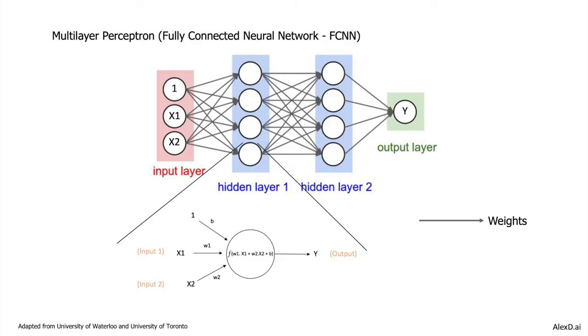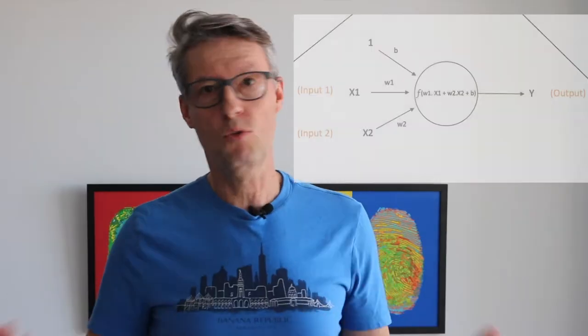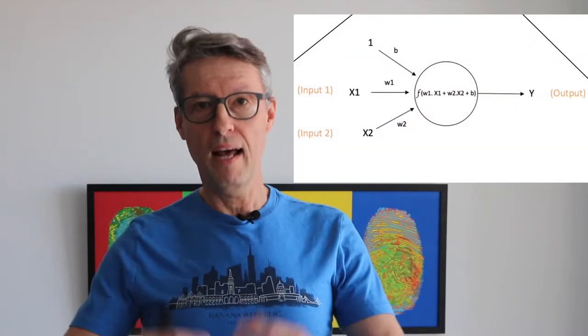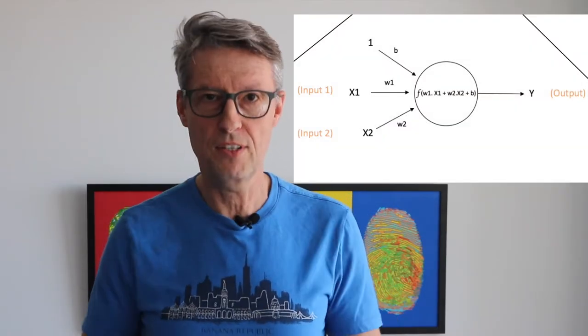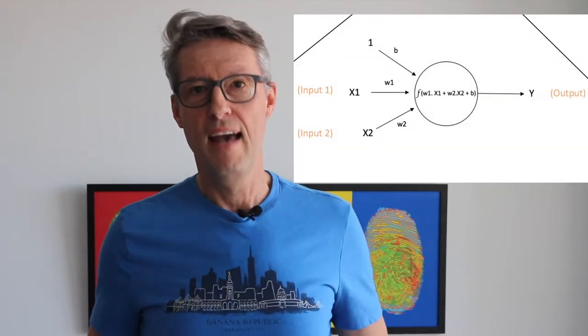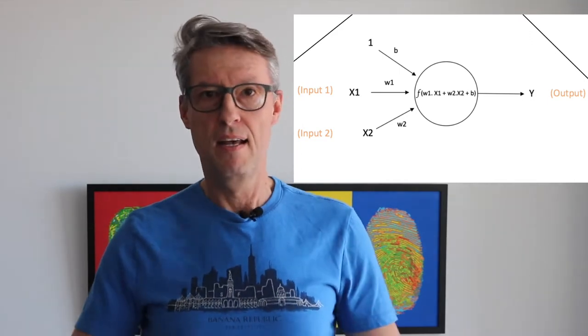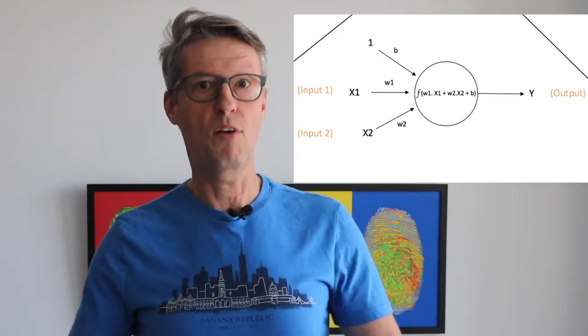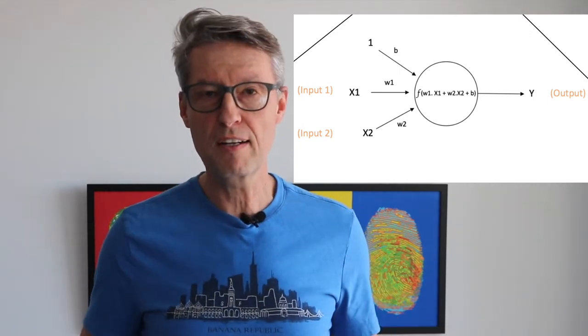But let's have a look at one unit — a neuron. A neuron receives inputs from all the features, and it makes a mathematical equation — that could be, for example, a linear regression equation —